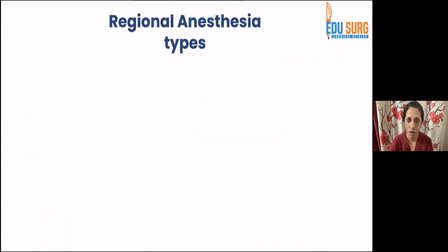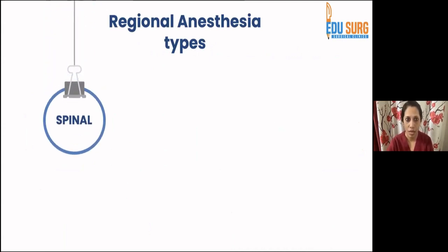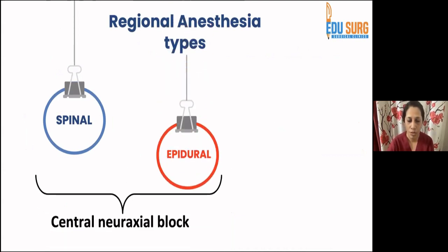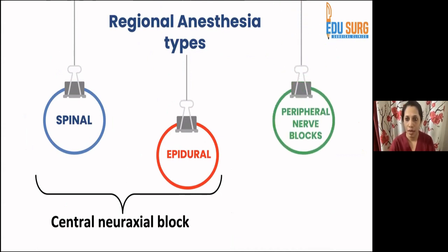What are the types of regional anesthesia most commonly used? The broad categories include spinal and epidural, both part of central neuroaxial block — injections given in the spine. You can also give a combination called combined spinal-epidural. The other category is peripheral nerve blocks.